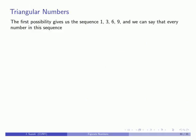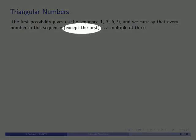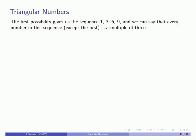In our first sequence, our numbers were one, three, six, and nine. And I can say that every number in this sequence, well, except for the first number, is a multiple of three. And that except for the first is a little bit troublesome.